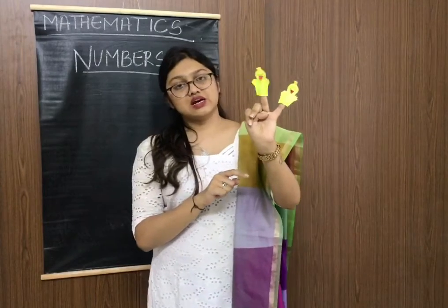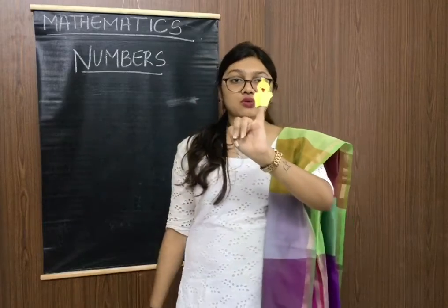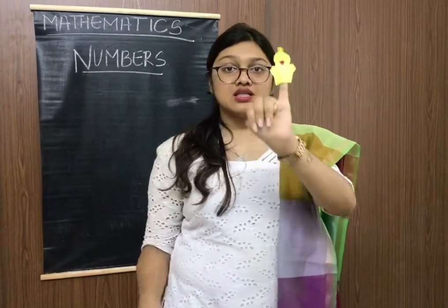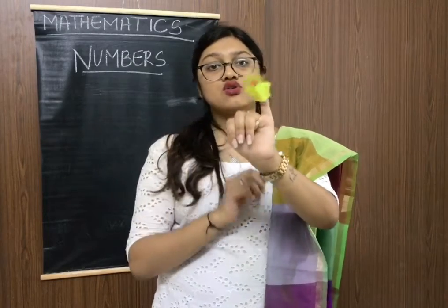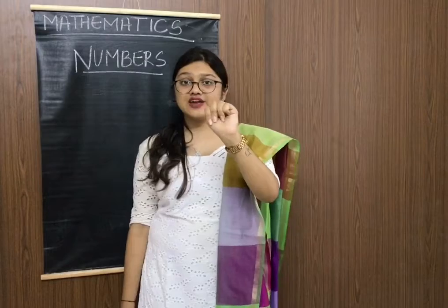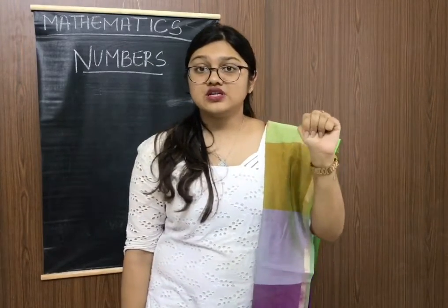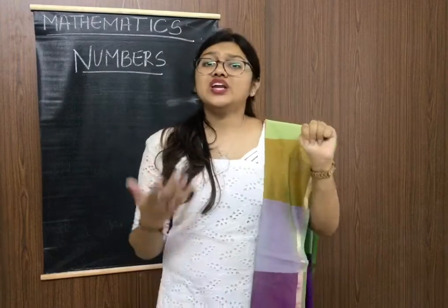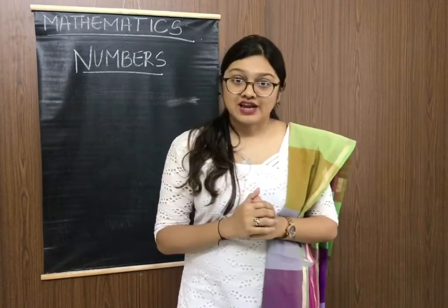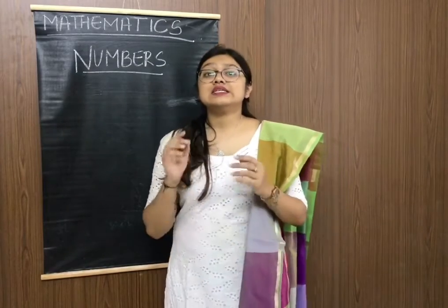This duck flies away. So how many ducks are left in the pond? 1 duck. This duck also flies away. How many ducks are left? 0. Why do we say 0? Because no ducks are left.